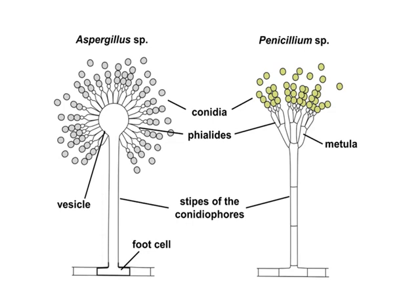These conidiophores end up in another structure which, in the case of Aspergillus, is termed the vesicle, while in the case of Penicillium it is termed the metula. In Aspergillus, the vesicle gives rise to structures called phialides, and from the phialides the spores of Aspergillus arise, which are termed conidia. As for Penicillium, the metula itself bears the spores, which are also termed conidia.